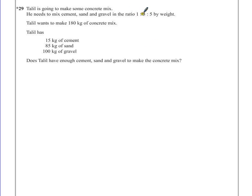So if we want a ratio of 1 to 3 to 5 where 1 part is the cement, we could make an assumption that 1 part means 15 kilograms. So if cement equals 15 and this is part of our ratio of 1 to 3 to 5,